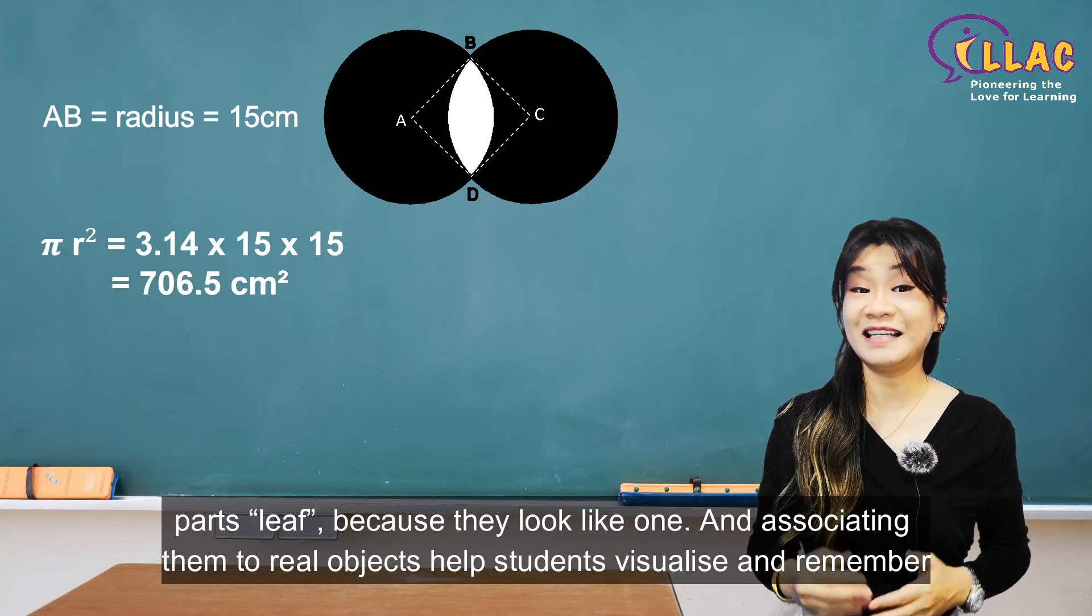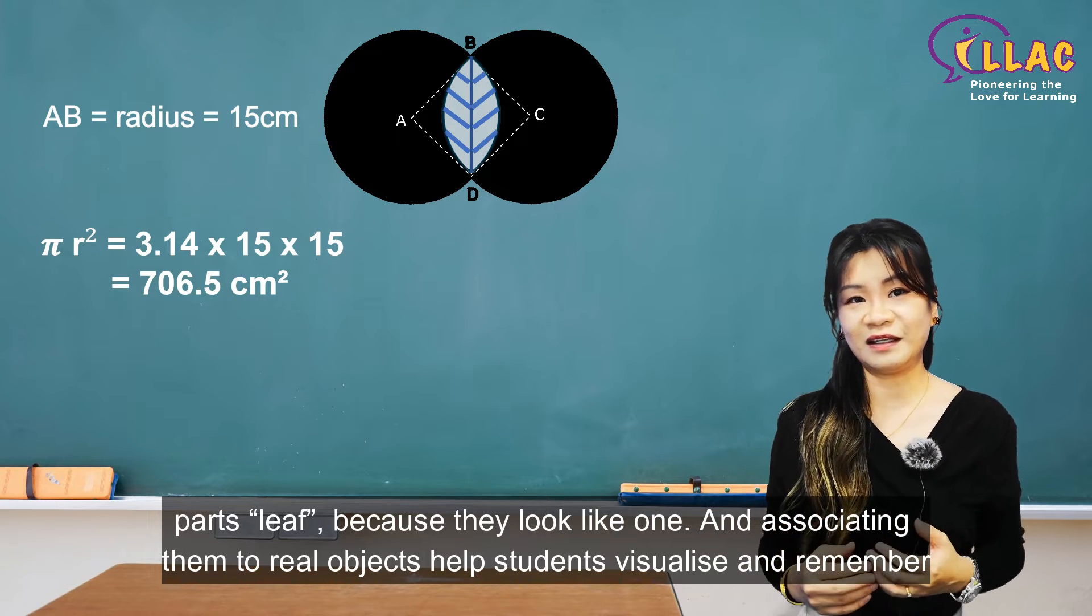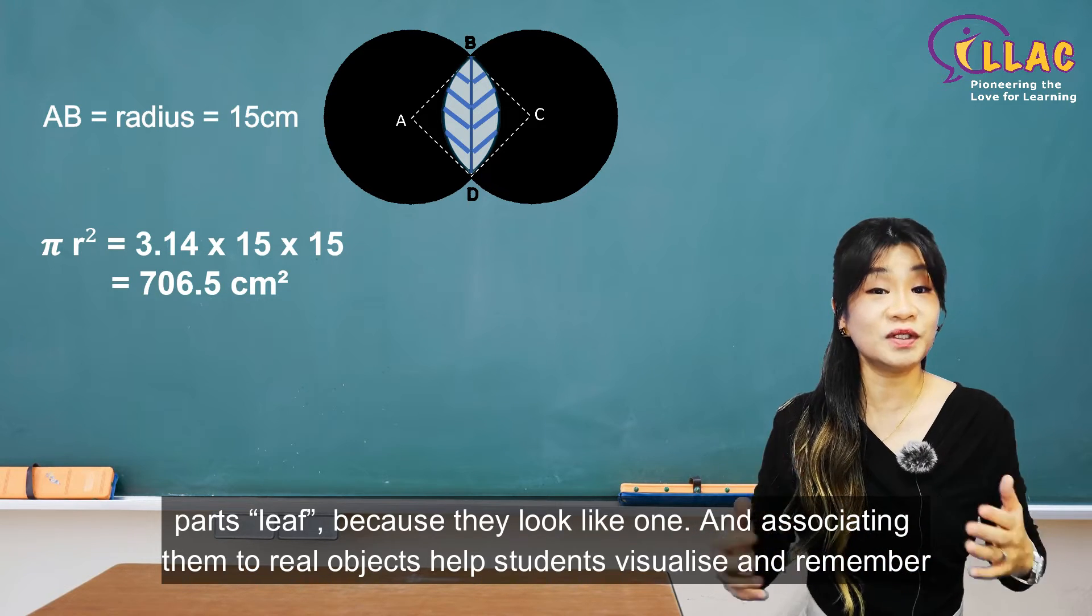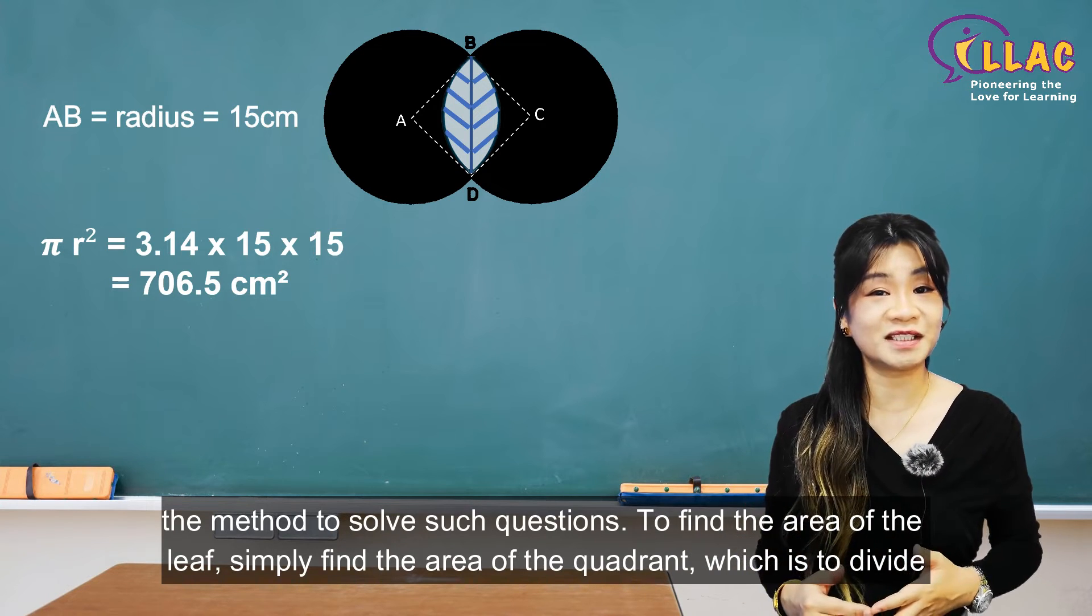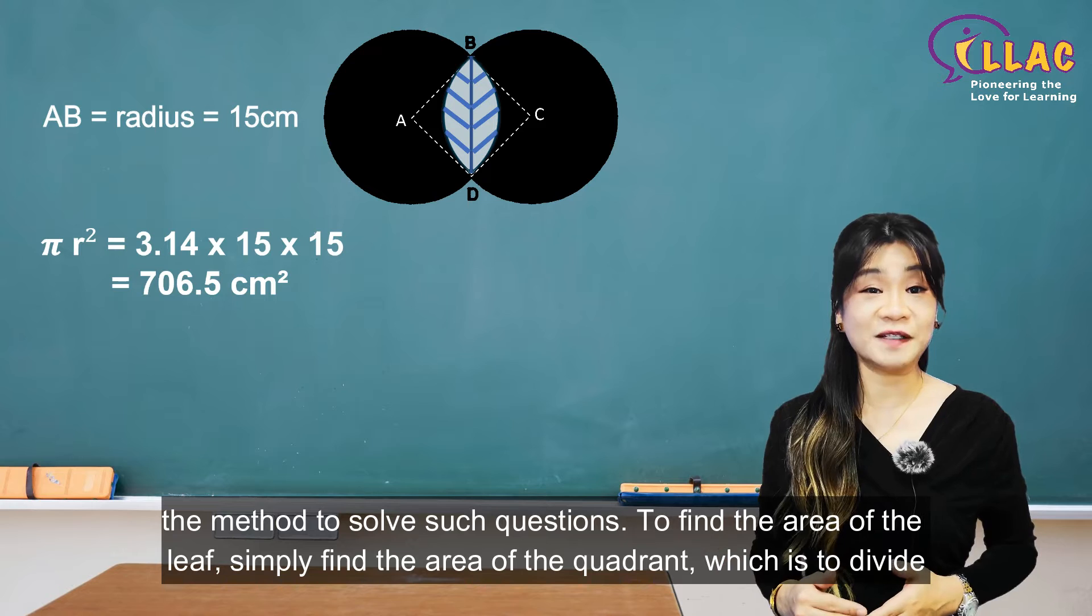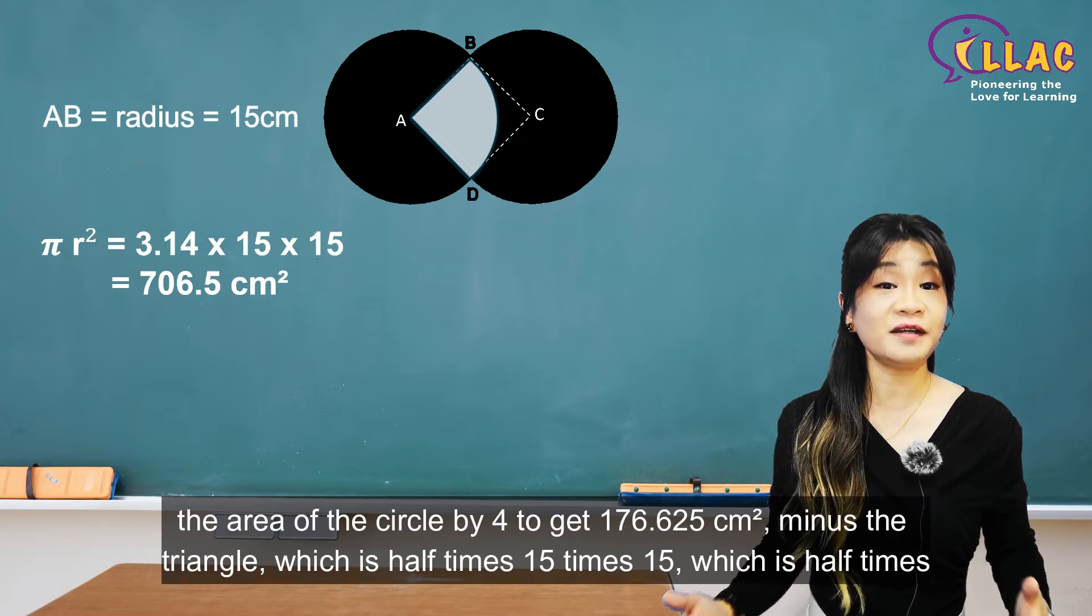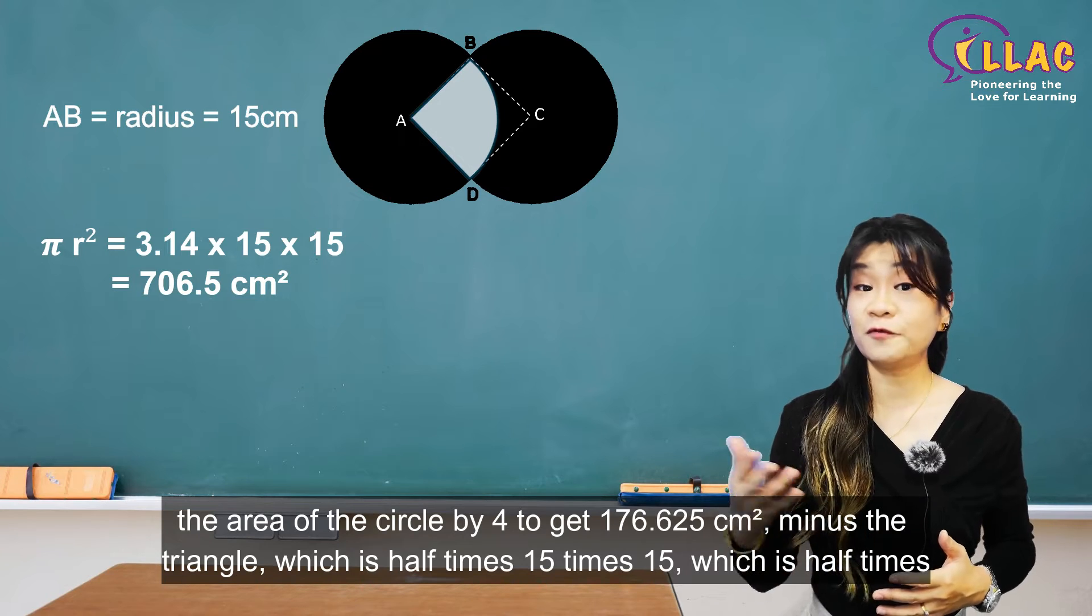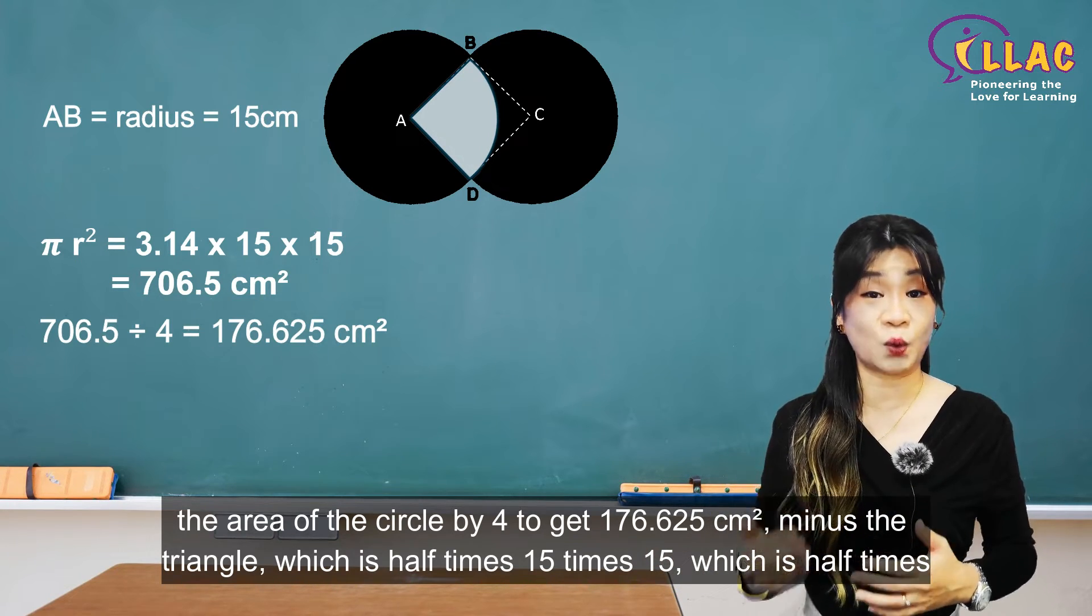I call the unshaded parts LEAF because they look like one. And associating them to real objects helps students visualize and remember the method to solve such questions. To find the area of the leaf, simply find the area of the quadrant, which is to divide the area of the circle by 4, to get 176.625 square centimeters.